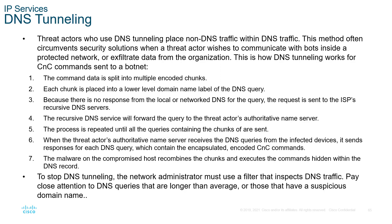When a security appliance sees traffic on port 53, it assumes DNS traffic — but that doesn't necessarily mean it is. An example of DNS tunneling to a CNC server botnet: command data is split into multiple encoded chunks; each chunk is placed in a lower-level domain name label of a DNS query; since no local DNS responds, the request is sent to the ISP; recursive DNS forwards the query to the threat actor's name server; the process repeats until all data chunks are sent; the threat actor sends a response to each DNS query; and the malware on compromised hosts combines all chunks of data to execute the command.